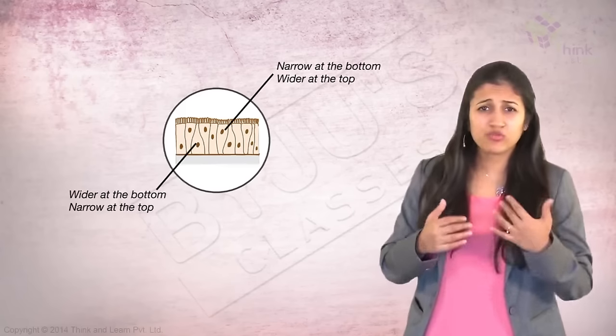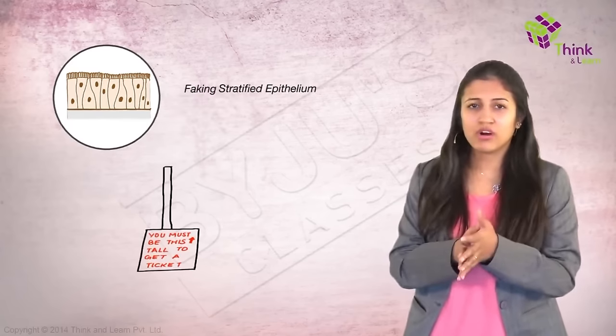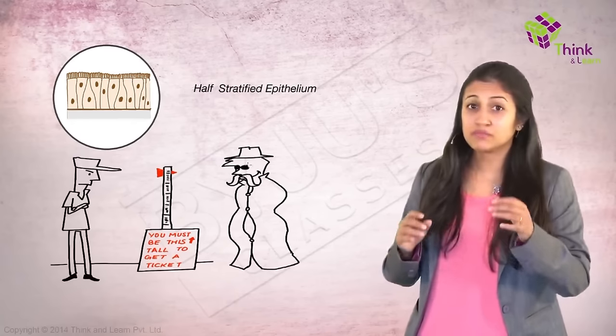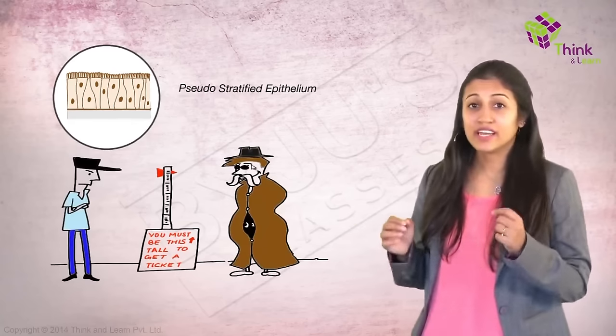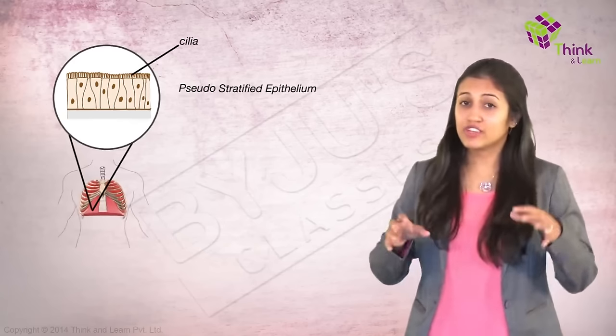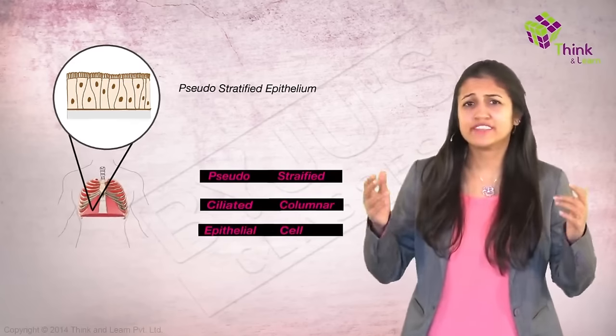And I've saved the best one for the last. This one is tricky, so pay attention. This looks neither simple nor stratified. Some cells are wider at the bottom and narrow at the top, while other cells are narrow at the bottom and wider at the top. It's like they're faking stratified epithelium. You might have heard the word pseudo before - it means misleading or deceptive. And that's exactly their name: pseudo stratified epithelium. And they're found in the lungs and they have some cilia on it. They have an awesome name for that too: pseudo stratified ciliated columnar epithelial cells.